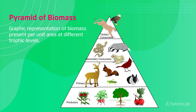Next is the pyramid of biomass — a graphical representation of the biomass present per unit area at different trophic levels. Biomass is also greatest for producers, followed by primary consumers, secondary consumers, and tertiary consumers.